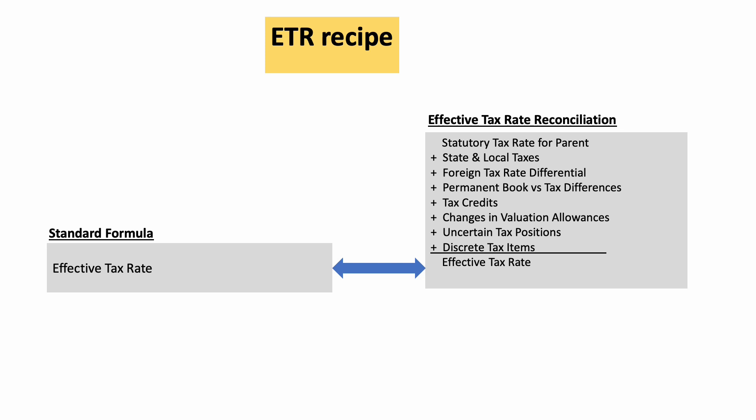Another item is tax credits. In some jurisdictions, corporations are allowed to take credits for employing a certain number of people in their organization or for investing in key areas in certain countries known as special economic zones. This can affect your effective tax rate by driving down the tax rate in that jurisdiction.